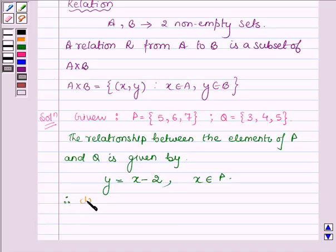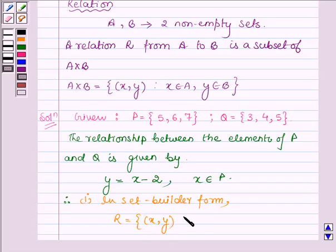first in set builder form, R is equal to the set having all the ordered pairs (x,y) such that y is equal to x minus 2 and x is equal to 5, 6 and 7, which are elements of set P.